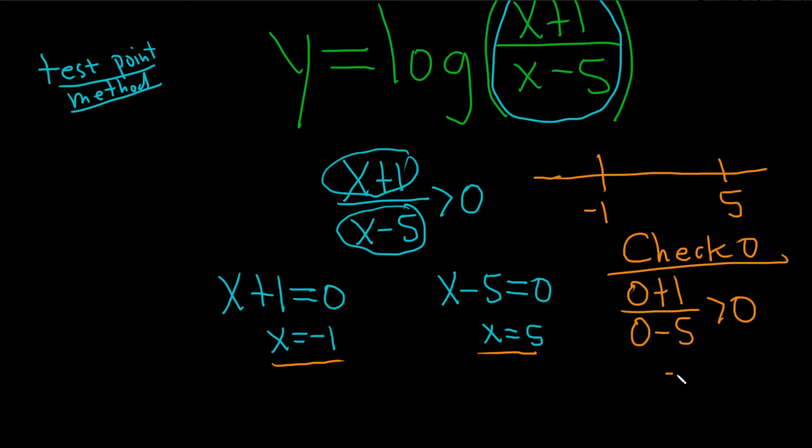We want to see if that is greater than 0. This will be negative 1 over 5. We want to see if that is greater than 0. It is not, so no. Because it's false, we don't shade.